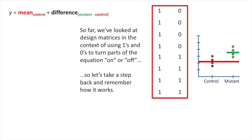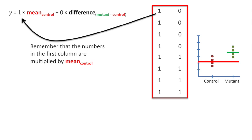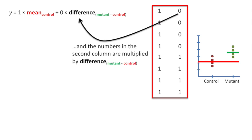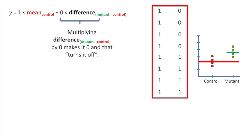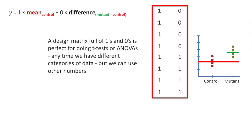Remember that the numbers in the first column are multiplied by the term for the mean of the control values, and the numbers in the second column are multiplied by the term representing the difference between the mean of the mutant values and the mean of the control values. Multiplying by one turns a term on by just letting it be, while multiplying by zero turns it off. A design matrix full of ones and zeros is perfect for t-tests or ANOVAs with categorical data, but we can use other numbers too.